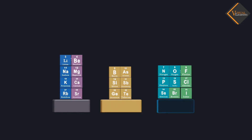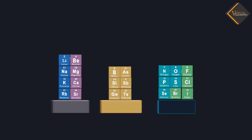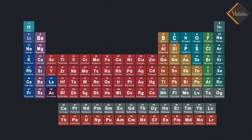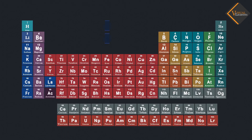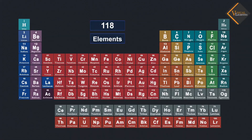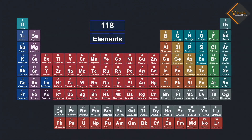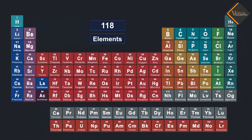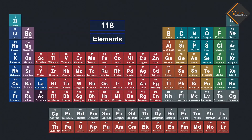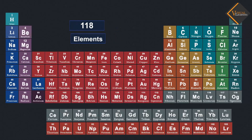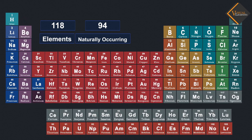Do you know how many elements are known till date? At present, 118 elements are known to us. All these have different properties. Out of these 118, only 94 are naturally occurring.